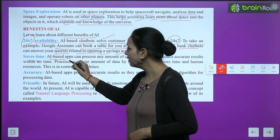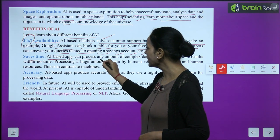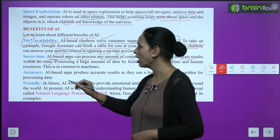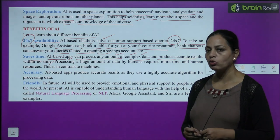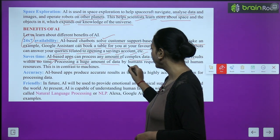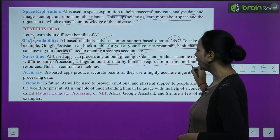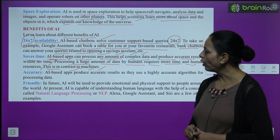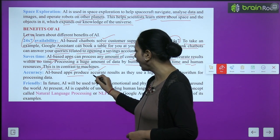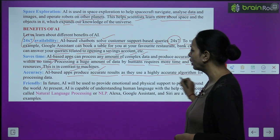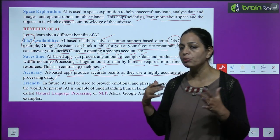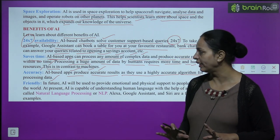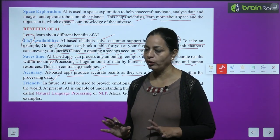Saves time. AI-based apps can process any amount of complex data and produce accurate results within no time. Processing a huge amount of data by humans requires more time and human resources — this is in contrast to machines. Accuracy: AI-based apps produce accurate results as they use a highly accurate algorithm for processing data. It is 100% accurate.